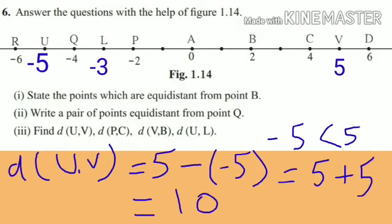Distance between point U and V. Point U is between −4 and −6, so the coordinate of point U is −5. Point V is between 4 and 6, so the coordinate of point V is 5. Here 5 is greater than −5, so the distance is the greater coordinate minus the smaller coordinate: 5 − (−5) = 5 + 5 = 10. So the distance between point U and V is 10 units.